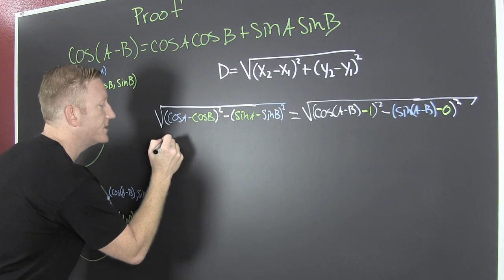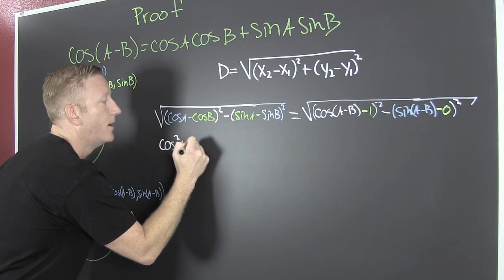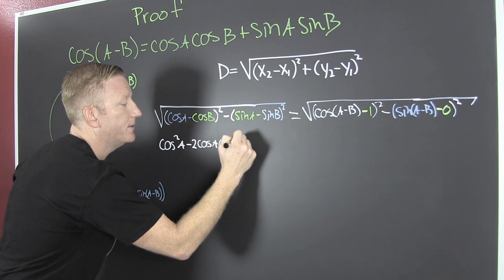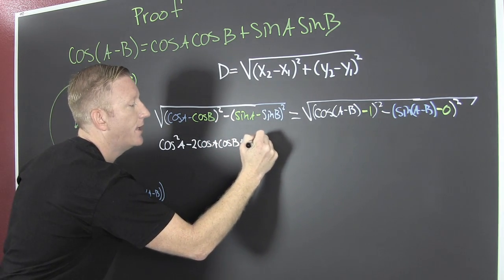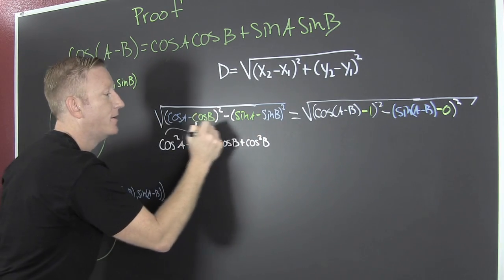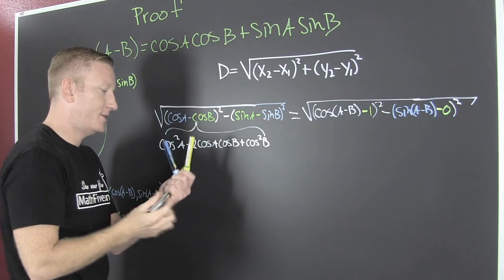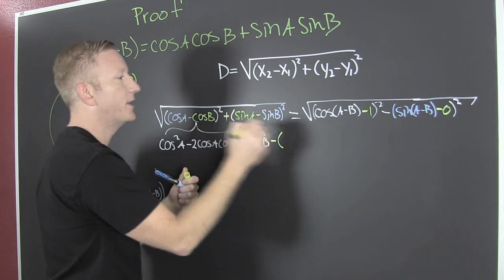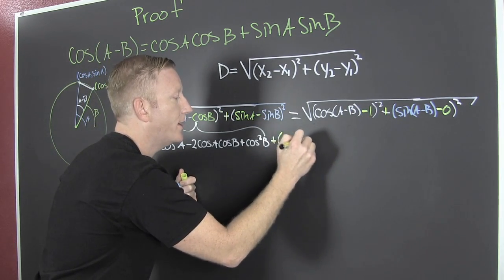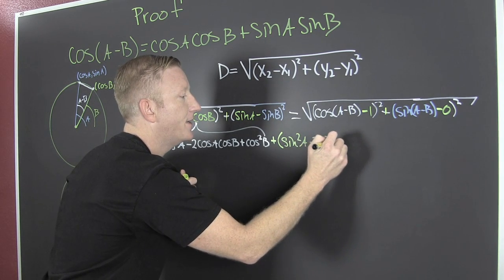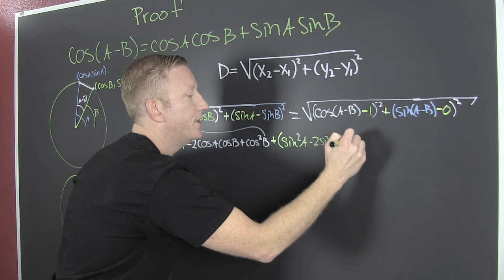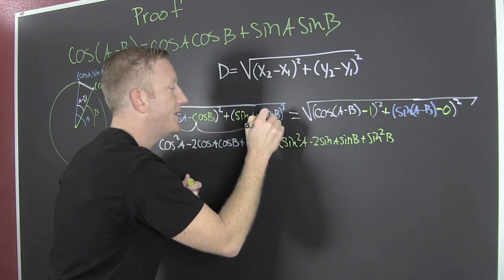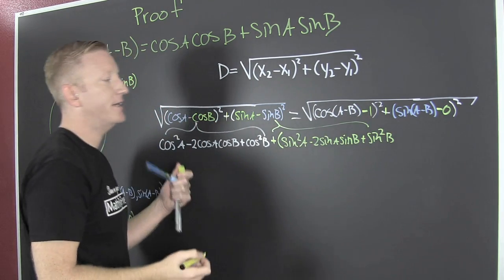I'm going to multiply that out. I'm using my special products. This is going to be the cosine squared A minus two times the cosine A cosine B and then plus the cosine squared B. And that's how this here multiplies out. This is going to get tough. So then this is minus this entire quantity, the sine squared A minus two times the sine A sine B plus the sine squared B, and then that is this guy expanded out.